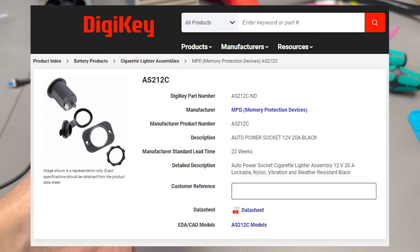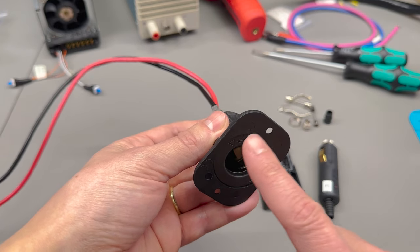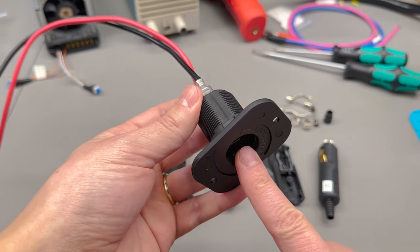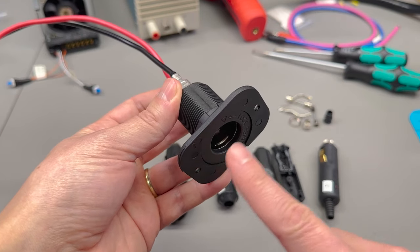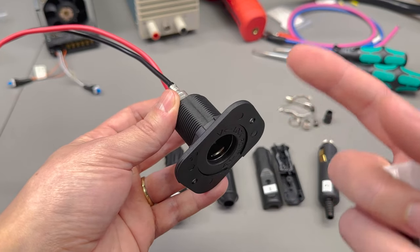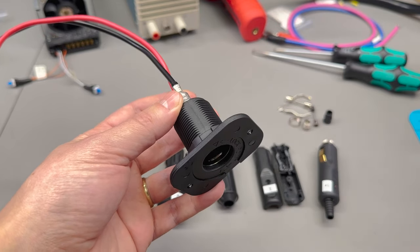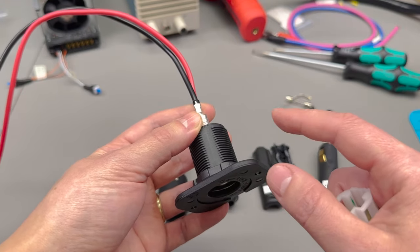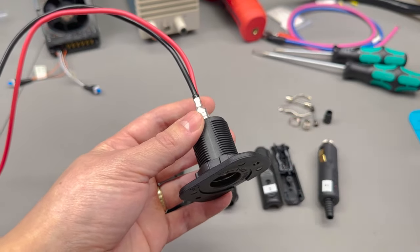I instead opted to use this female socket that I also got from DigiKey. It comes with a data sheet and the rating of 20 amps, because whether or not a particular cigarette plug withstands its rated current is also dependent on this female socket, which should also withstand the current without overheating.